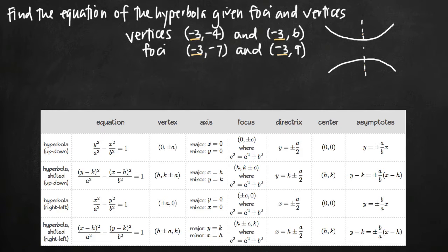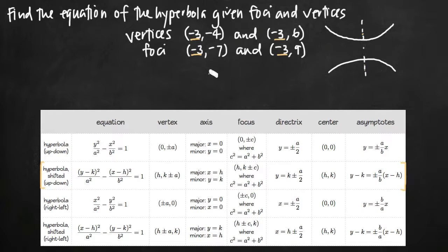With that in mind, it'll be helpful to look at the chart on the website. We know our hyperbola opens up and down and is shifted, which means we're looking at the second row in the table — the shifted hyperbola opening up and down. Therefore, the equation of this hyperbola is going to be defined by that specific equation form.